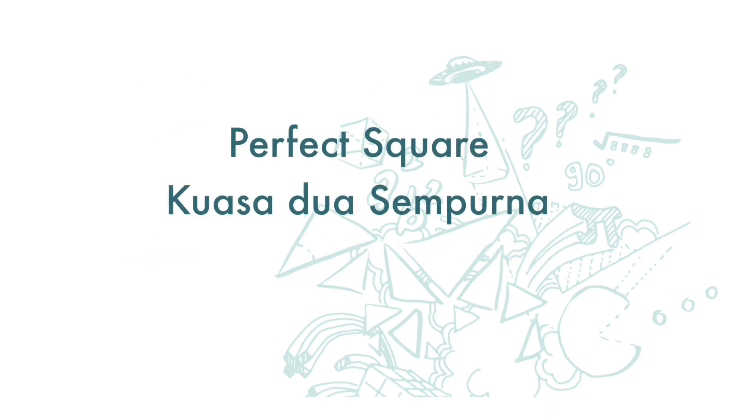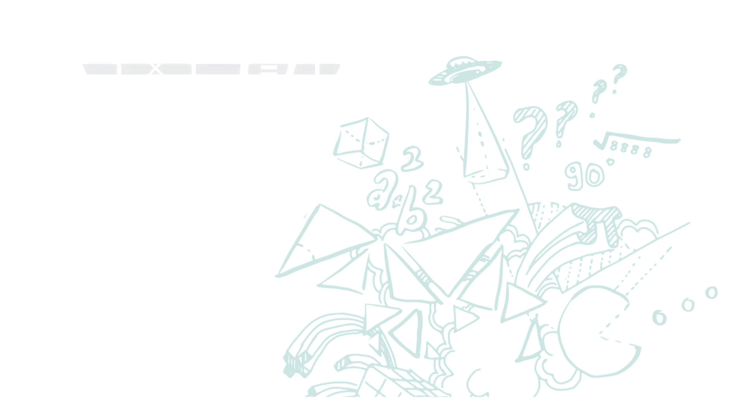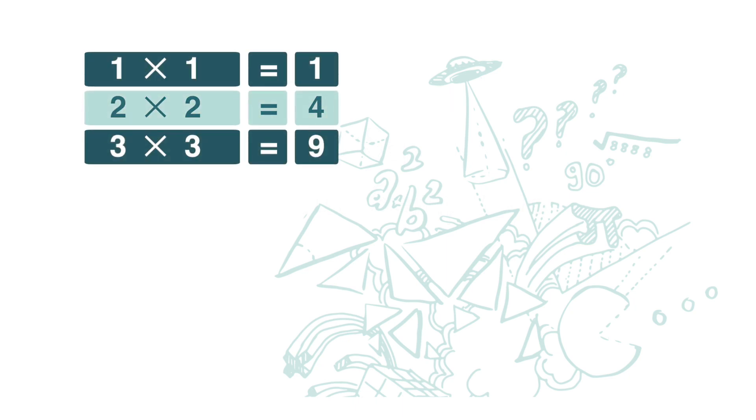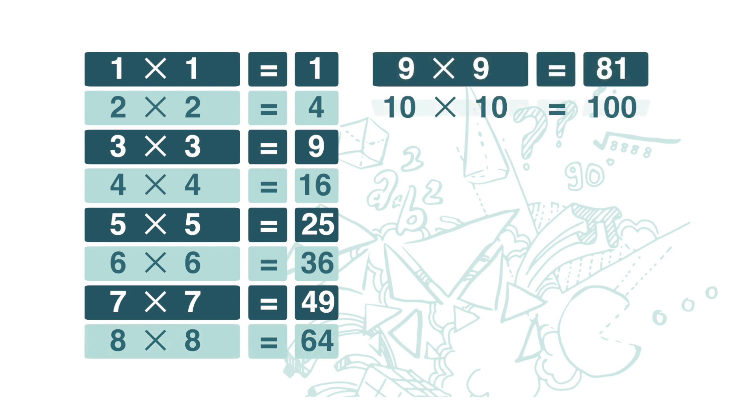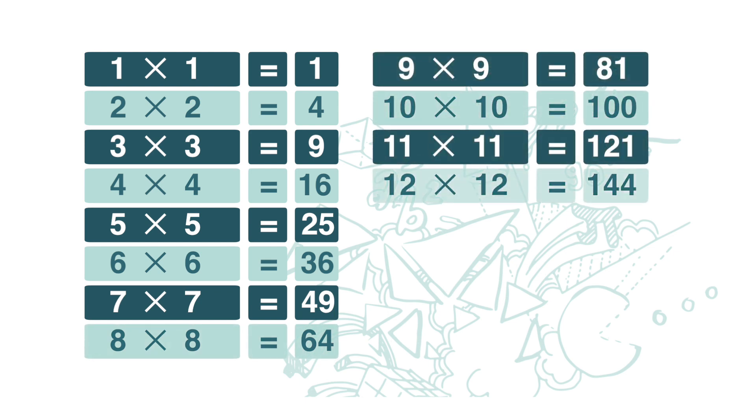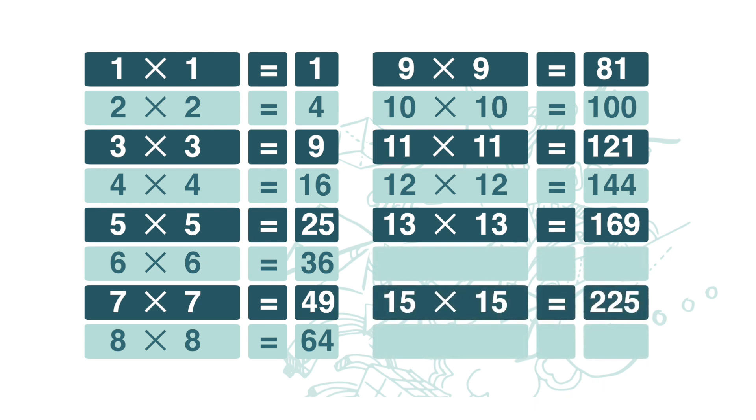Next we come to perfect square. 1 times 1 is 1, 2 times 2 is 4, 3 times 3 is 9, 4 times 4 is 16, 5 times 5 is 25, 36, 49, 64, 81, 100, 121, 144, 169, 15 times 15 is 225, and so on.